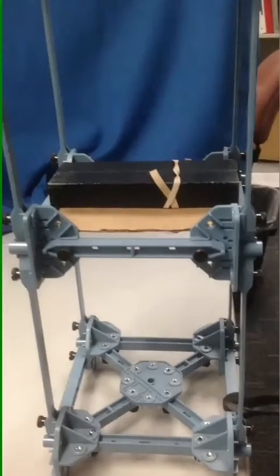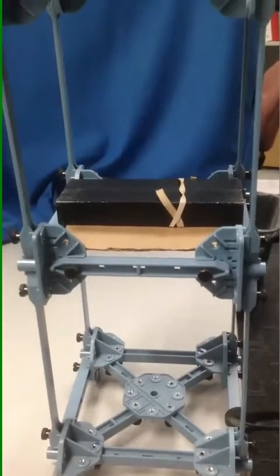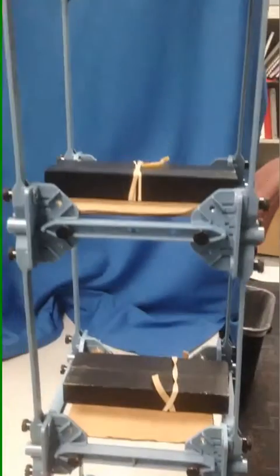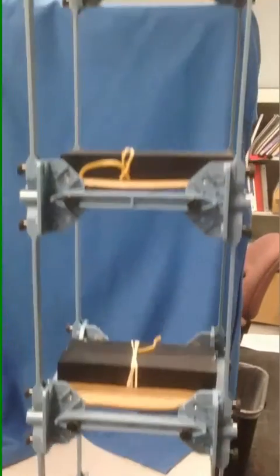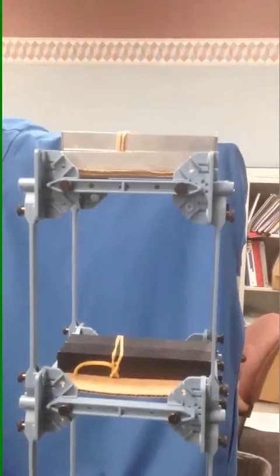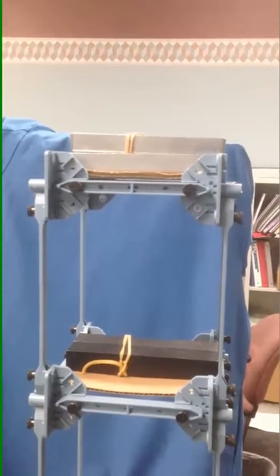Also when you're building the structure, you're going to want to have symmetric loading on each of the floors. Also for any weights, you may wish to place a rubber band around them so that they do not translate during the motion of the structure.